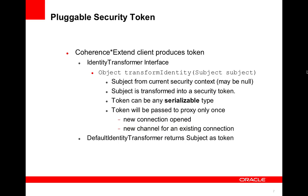There's a pluggable interface called the identity transformer that allows you to produce that token. It's a one-method interface — transform identity. You will be passed the subject that's associated with a security context, the subject in that subject doAs. This allows you to take that subject and do whatever you need to do to produce a security token. You can ignore that subject or you can get information from that subject, however you see fit.